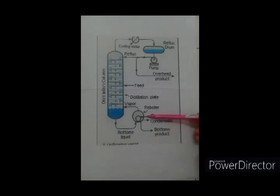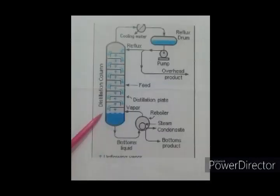The function of the reboiler: Reboilers are heat exchangers typically used to provide heat to the bottom of industrial distillation columns. They boil the liquid from the bottom of a distillation column to generate vapors which are returned to the column to drive the distillation separation.